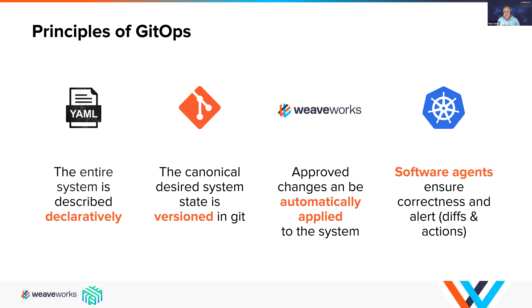If you put those declarations into Git, you get all the benefits of source code control — versioning, diffs, tracking, and auditing. You can find out who made what change to everything. With GitOps, everything declared in Git is picked up by agents that run inside your cluster and applied to the Kubernetes API automatically.